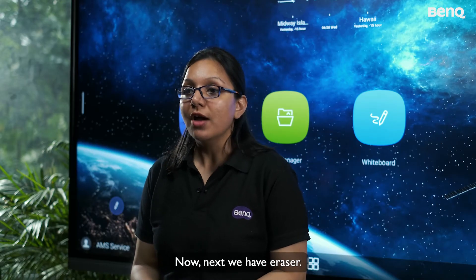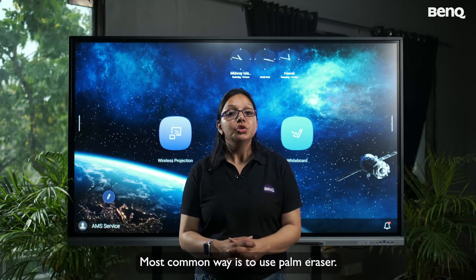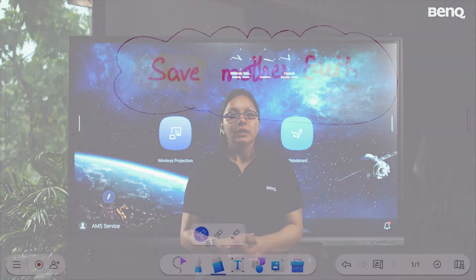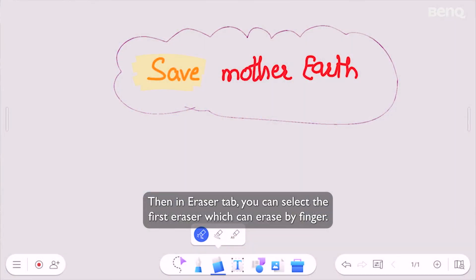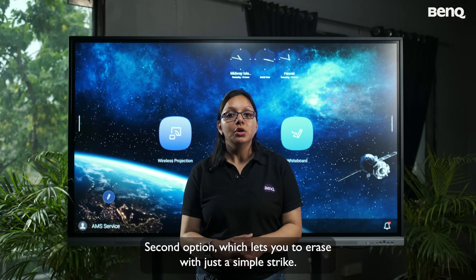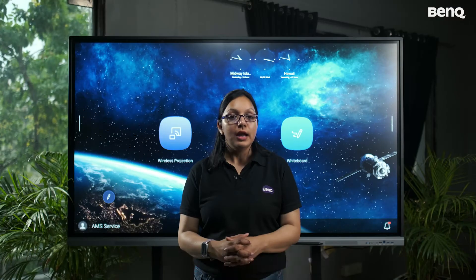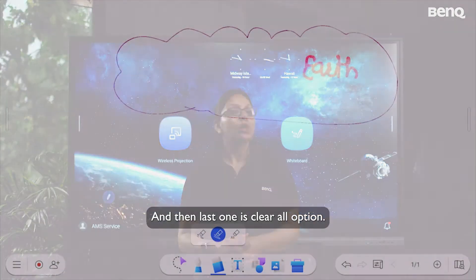Now, next we have eraser. To erase, you have multiple ways to do that. Most common way is to use palm eraser. Then in eraser tab, you can select the first eraser, which can erase by finger. Second option, which lets you to erase with just a simple strike. And then last one is clear all option.